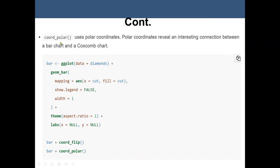Then we also have coord_polar. Normally we use the polar to set our polar coordinates. So normally a polar coordinate will reveal an interesting connection between a bar chart and also a coxcomb chart. So here we have the ggplot. We are using the diamond data. We store the diamond data in the object name bar.